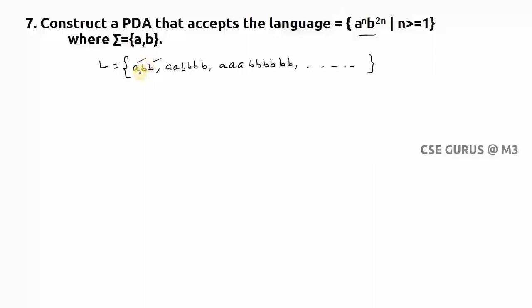Now how to solve this one — what is the logic? In our previous example for a^n b^n, whatever number of a's you get, you push them into the stack. When you get b, one b pops one a — it matches like this. Now what we need to do here for a^n b^(2n): how to match it?